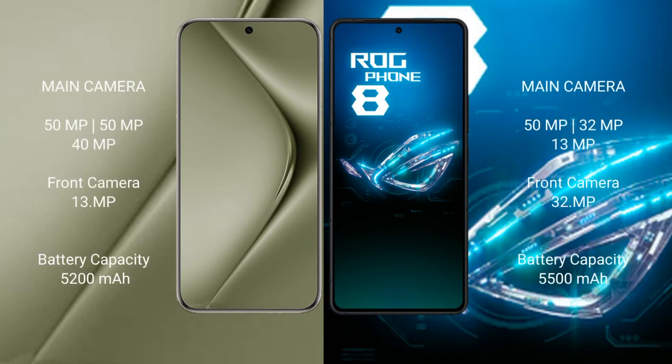Huawei Pura 70 Ultra features a triple rear camera setup: 50MP main, 50MP, and 40MP cameras, plus a front camera of 13MP. Asus ROG Phone 8 also features a triple rear camera setup: 50MP main, 32MP, and 13MP cameras, plus a front camera of 32MP.